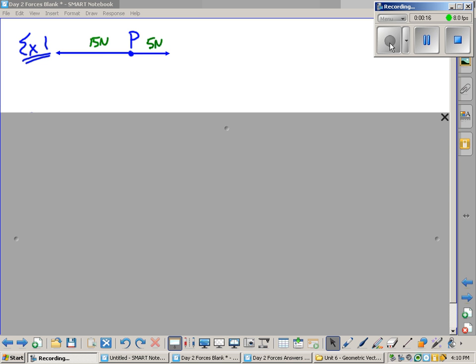We have one person who is pulling in this direction and applying a 15 Newton force, and we have another person in the opposite direction applying a 5 Newton force.